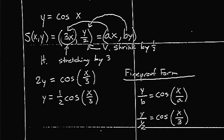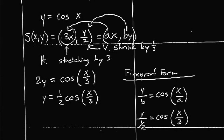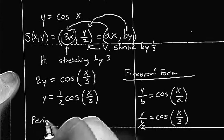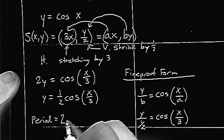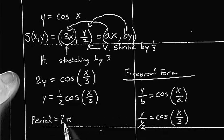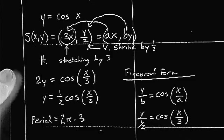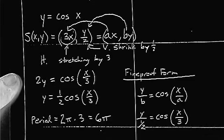That's what a lot of teachers refer to as fireproof form. Now, the period — we know that for a cosine function it starts out at 2 pi. But we are doing a horizontal stretch by 3, so we are multiplying by 3. Our new period is going to be 6 pi.